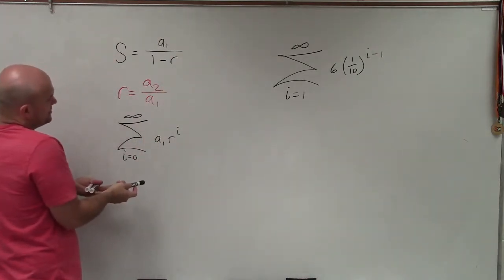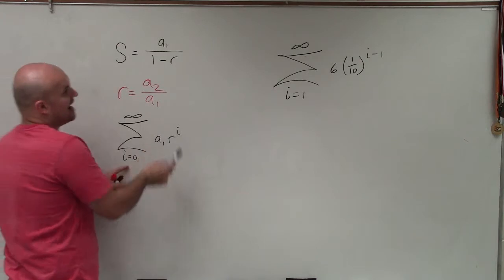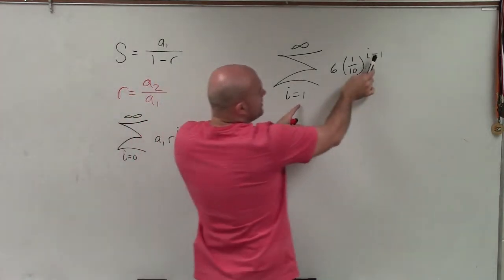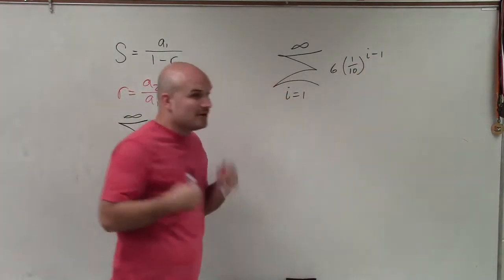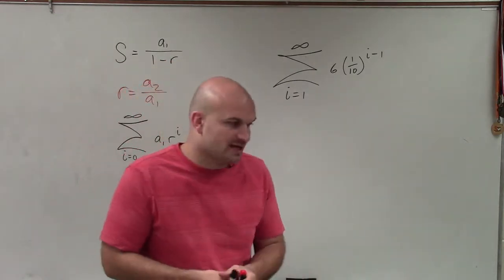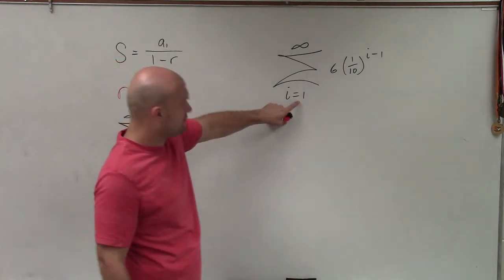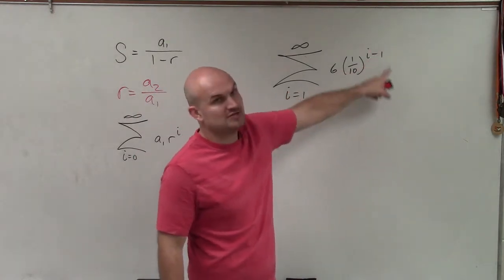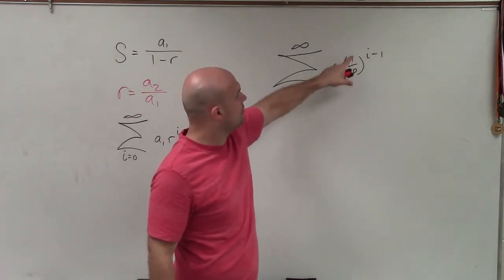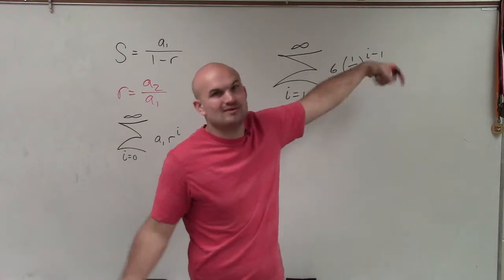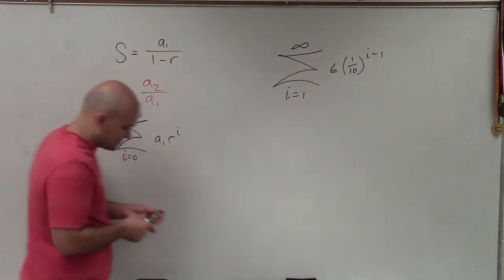In the format that I wrote in this summation, we're starting at 0, and then it goes up to i. You can see here, we start at 1, and it's i minus 1. It's not really going to affect us at all, because if I still want to find a sub 1, I'm going to plug in my first term. So when I plug in 1, 1 minus 1 is 0. So your r — 1 over 10 raised to 0 — is still going to be 1. So our a sub 1 is going to be 6 in this case.